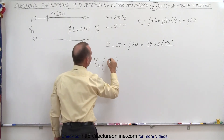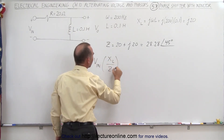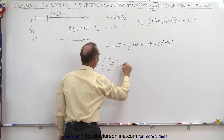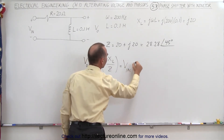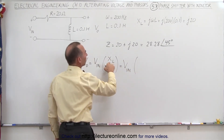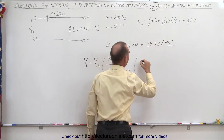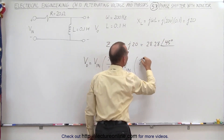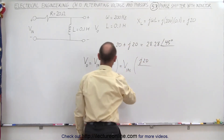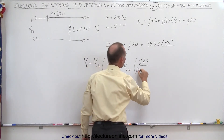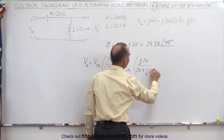So this is going to be XL divided by Z, meaning the output voltage equals the input voltage times XL — that's J20 — divided by the total impedance Z, which is 20 plus J20.